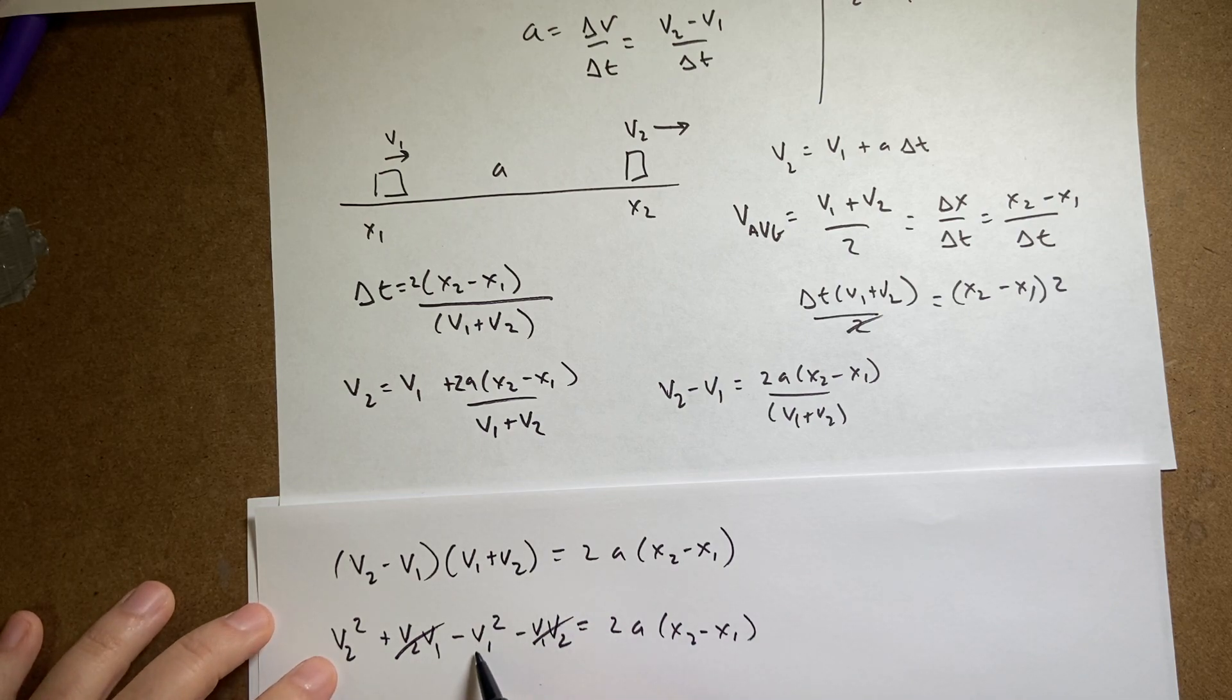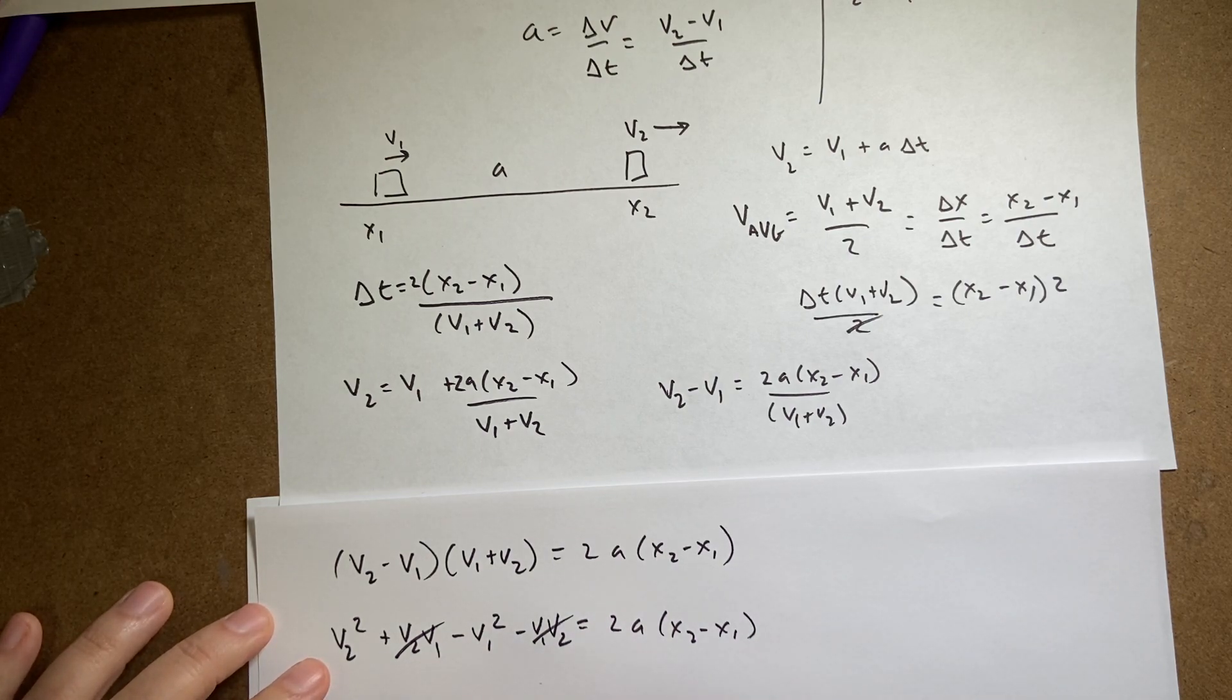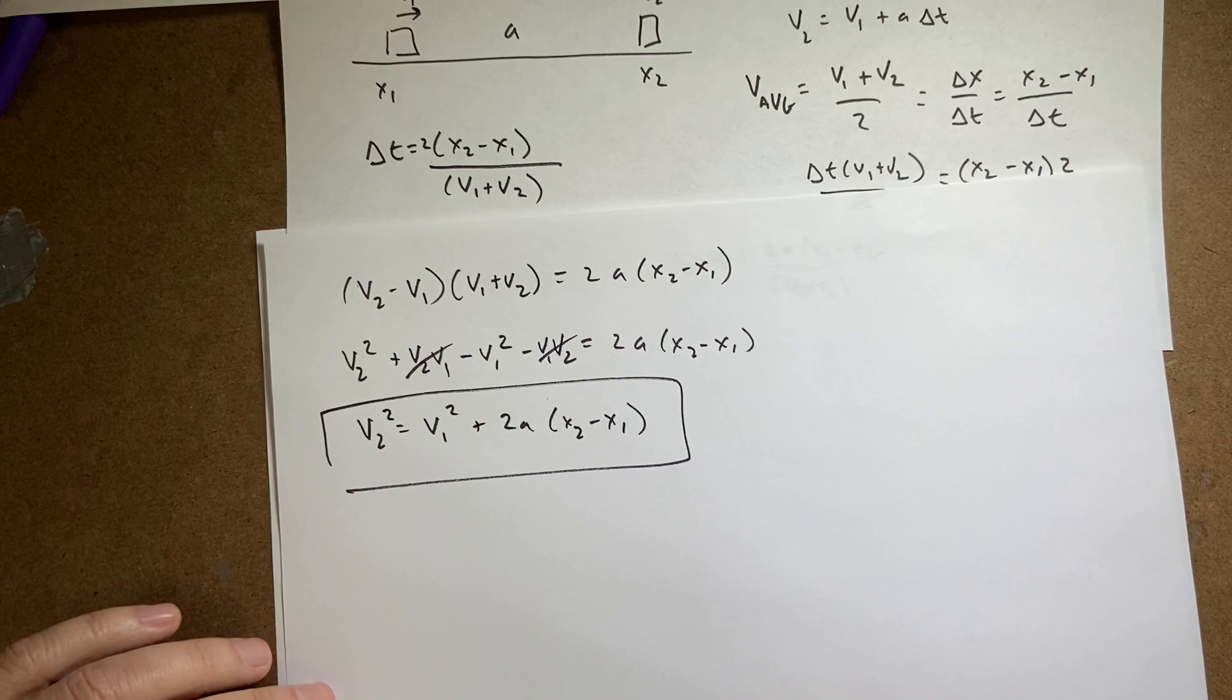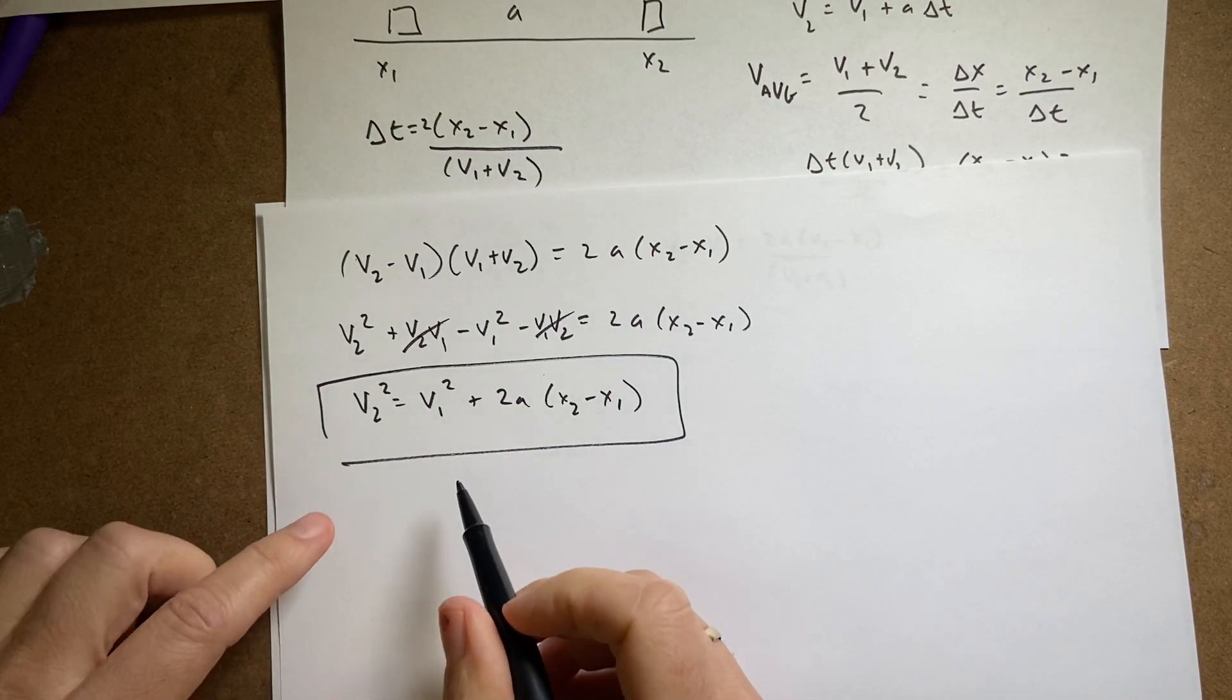Now right here I have a v2 v1 and a minus v1 v2 those cancel. So I get, and now I'm going to add this to the other side so I get v2 squared equals v1 squared plus 2 a x2 minus x1 and that is your third kinematic equation.